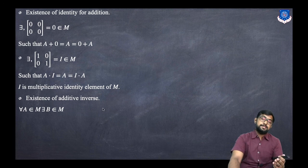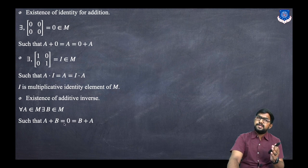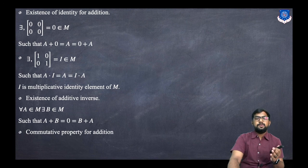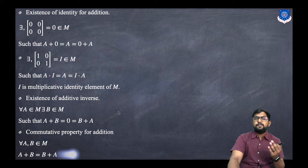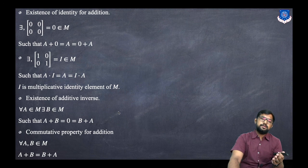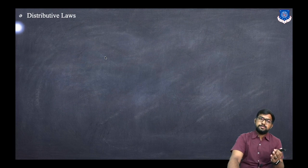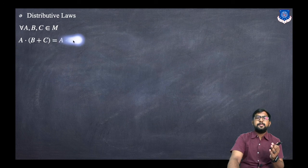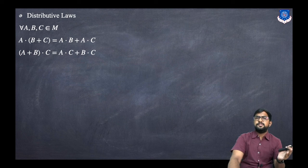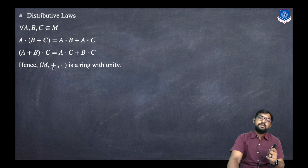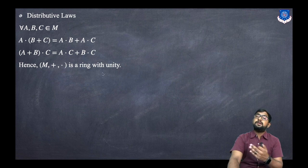For existence of additive inverse, for every A in M there exists B in M such that A + B = zero matrix = B + A. For commutativity of addition, A + B = B + A. For distributive laws, A·(B + C) = A·B + A·C and (A + B)·C = A·C + B·C. Hence (M, +, ·) is a ring with unity.